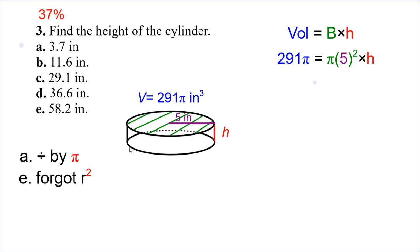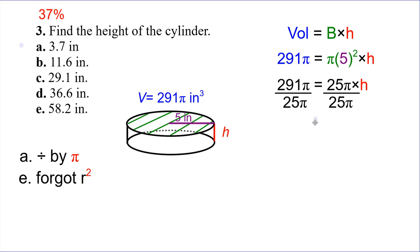Number three: find the height of the cylinder. This one's a little tricky because it gives us the volume and we have to work backwards. First, plug everything into your formula. The volume they told us was 291 pi; the area of the base with radius five is five squared, which would be twenty-five pi — so twenty-five pi times the height. Then to get the height, all we do is divide both sides by twenty-five, which gives us a final answer of eleven point six four, rounded to the tenth, which would be B.